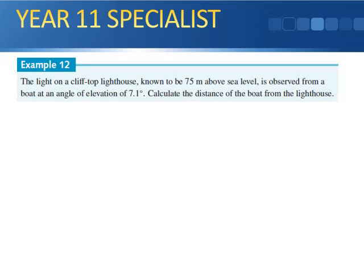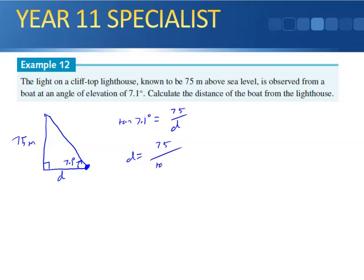Example 12: the light on top of a cliff-top lighthouse is known to be 75 meters above sea level and is observed from a small boat at an angle of elevation of 7.1 degrees. Calculate the distance of the boat from the lighthouse. We have tan(7.1°) = 75/d, so d = 75 / tan(7.1°) = 602 meters.